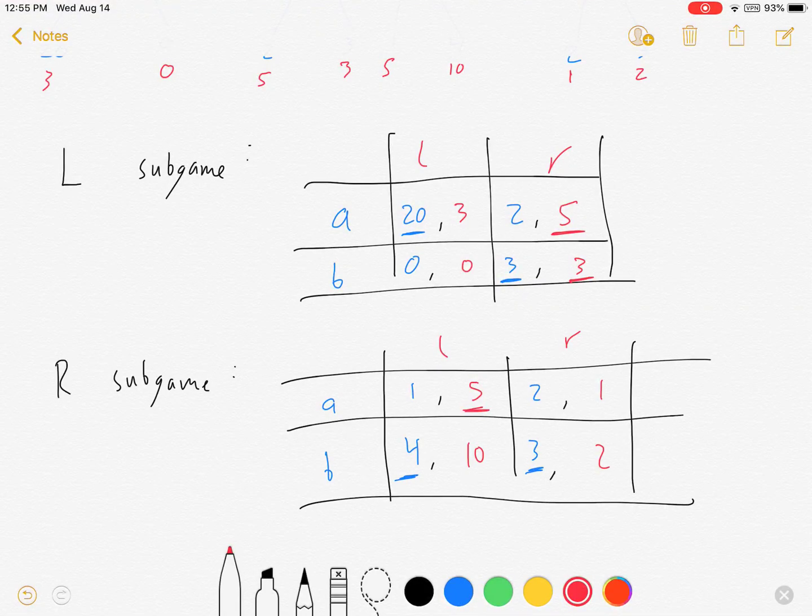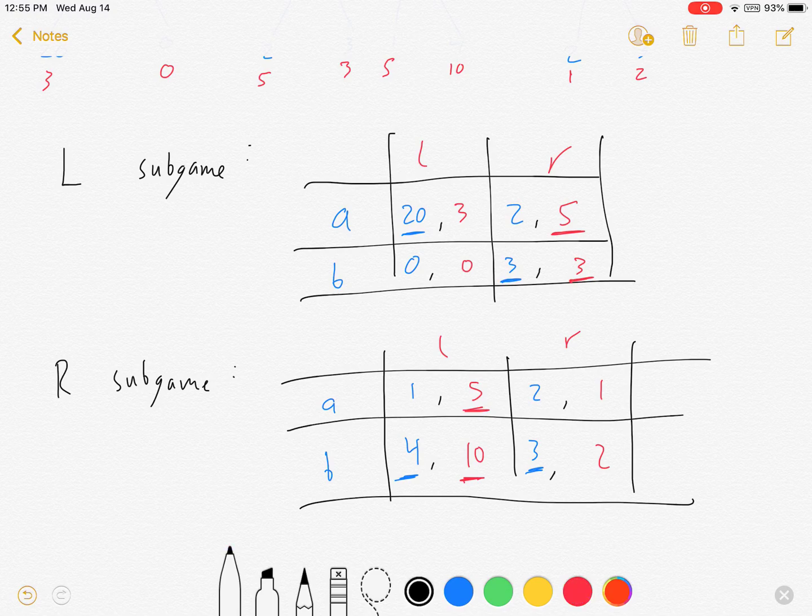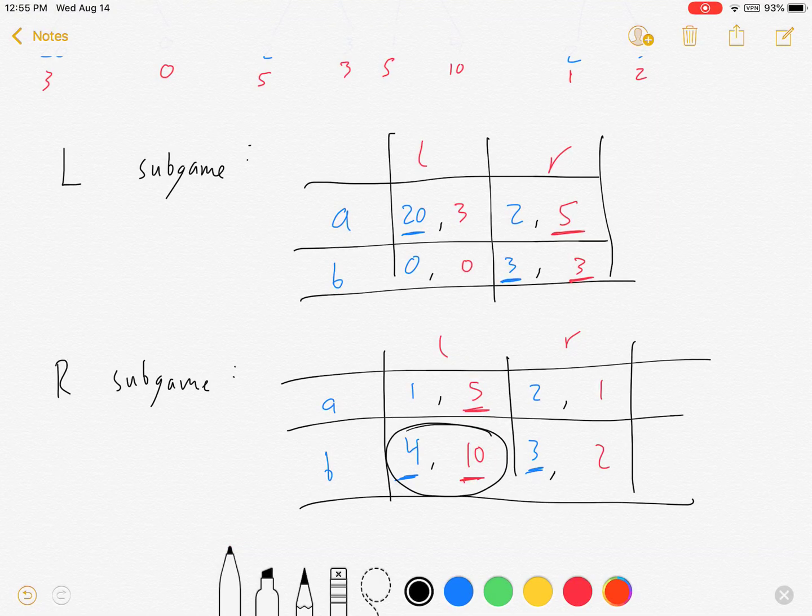And if blue plays B, red will play left. All right. And so here we've got another Nash equilibrium for the right-hand sub game.